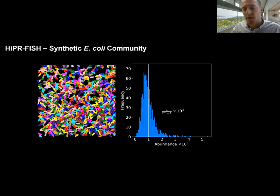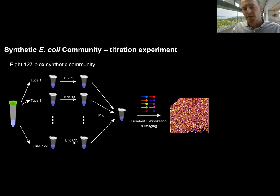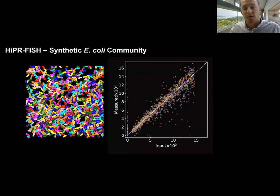Hao pointed out that you would get the same result if the classifier were just a random classifier. So we did another experiment where we mixed the barcodes in unequal proportions across eight batches of 127 or 128 synthetic communities, imaged many cells, and compared the measured abundance frequency to the expected abundance. We found an excellent correlation.